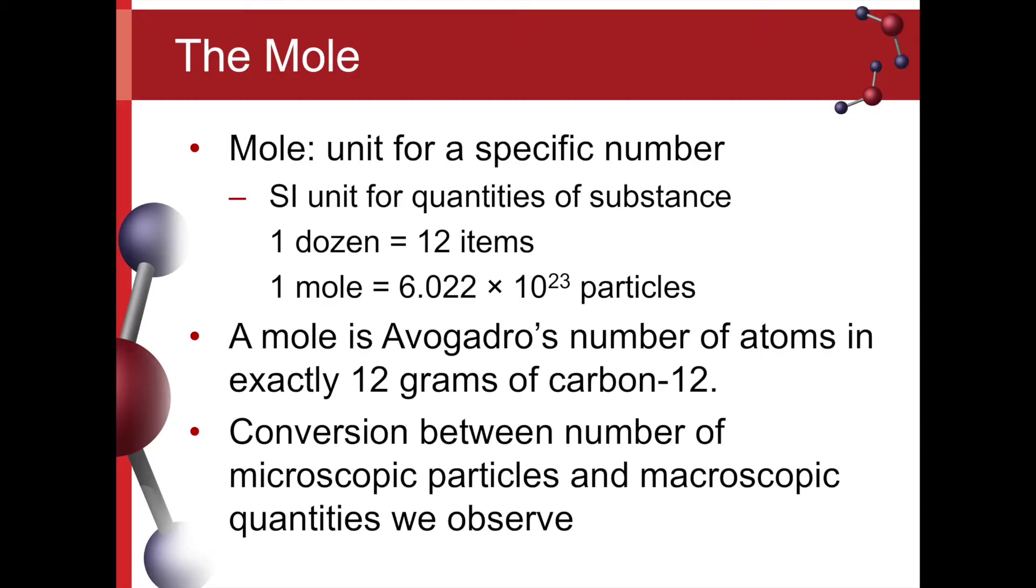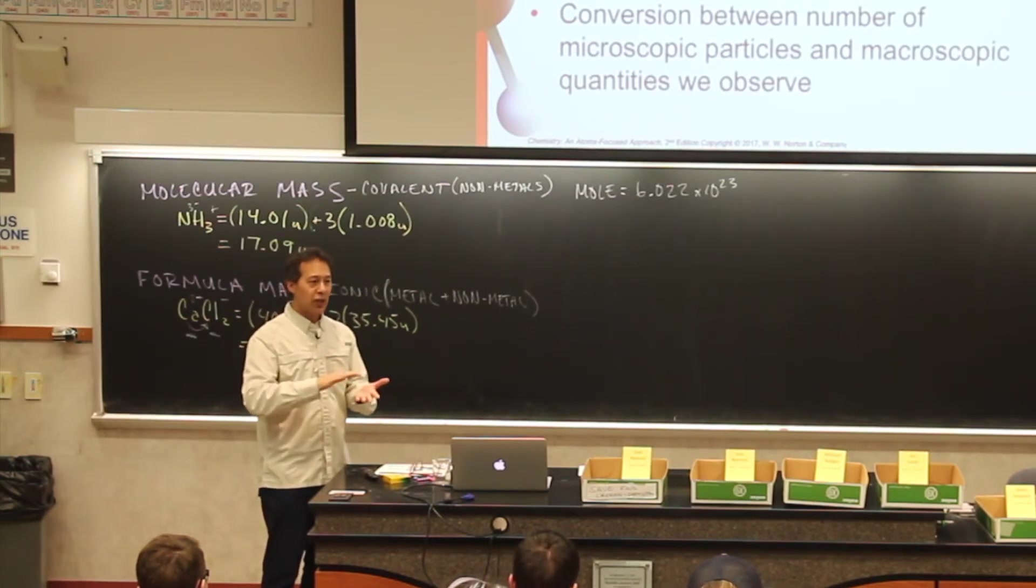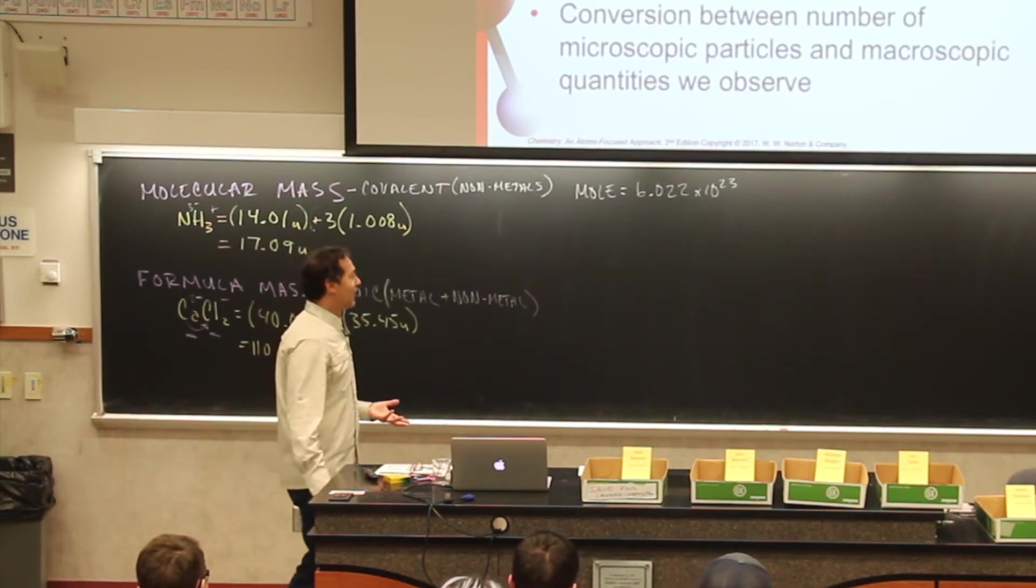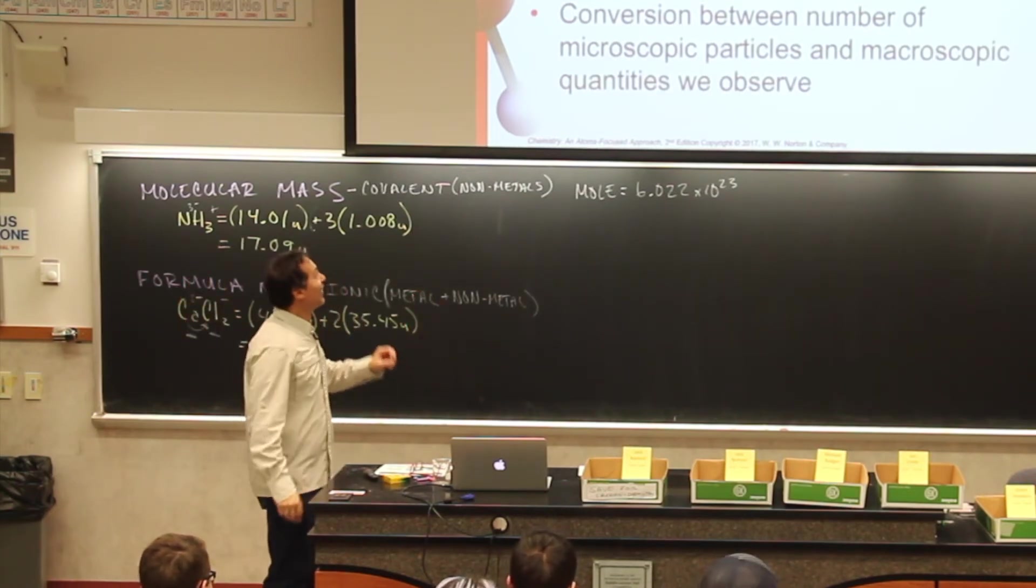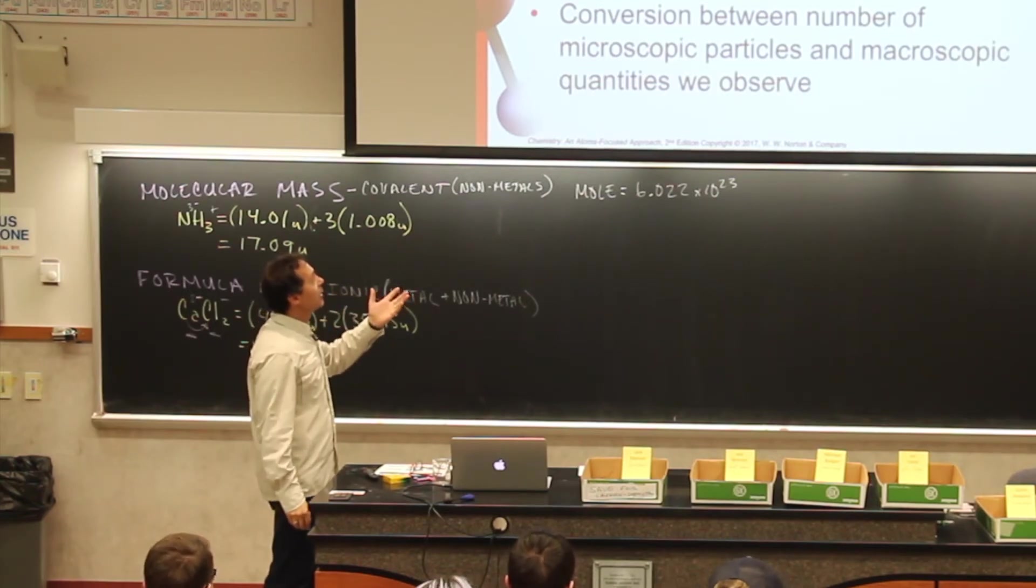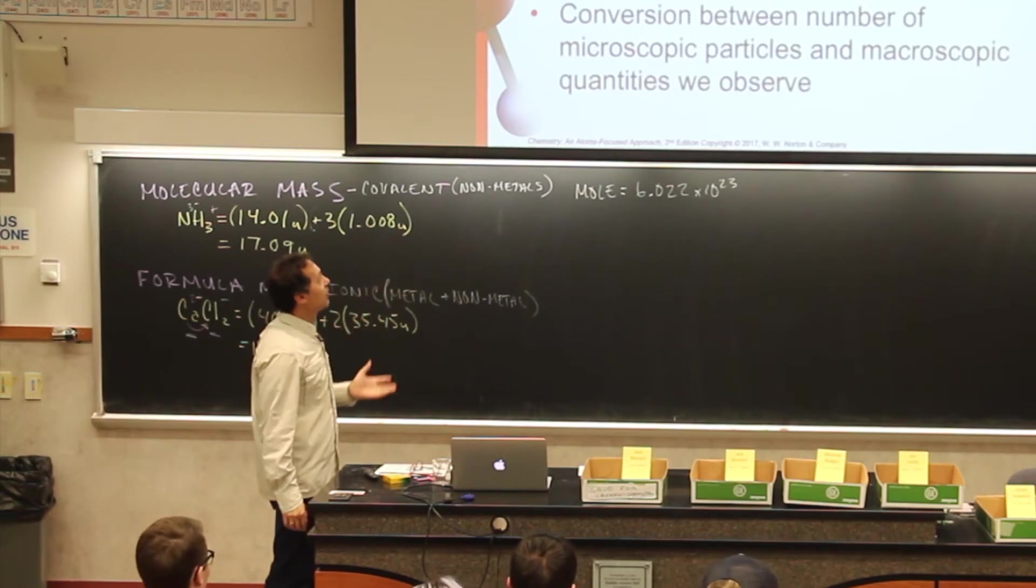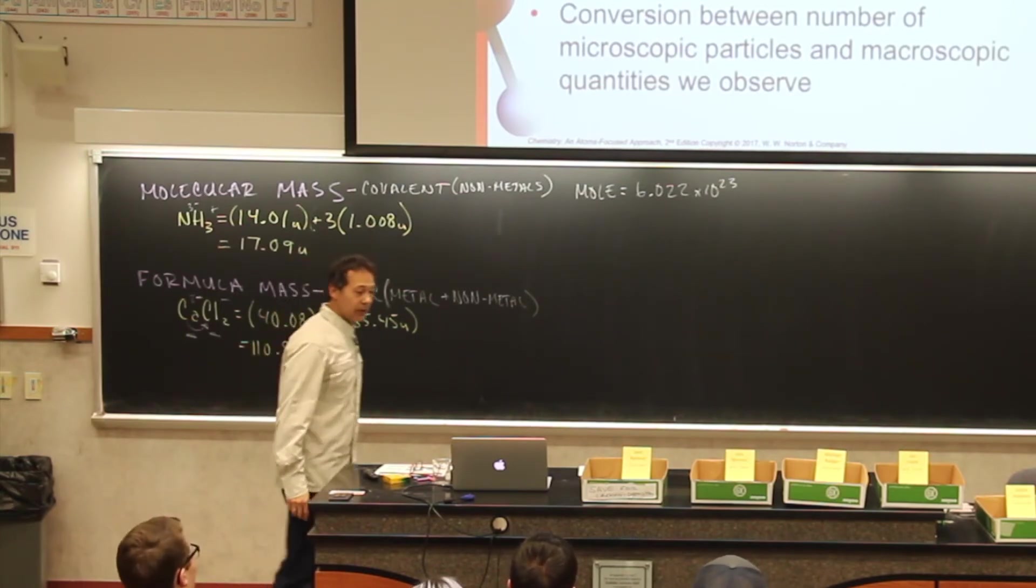And why do we use this number? The reason we use this number is because if we take this here and turn it into grams, if we add 110 grams of calcium chloride, it would be this many formula units of calcium chloride. Now a mole, or we also call this Avogadro's number. Stupid fact for you: Avogadro did not come up with this number, they just named it after him. Avogadro's number is the same as the number of atoms in exactly 12 grams of carbon-12.